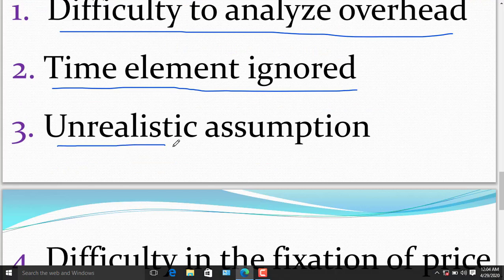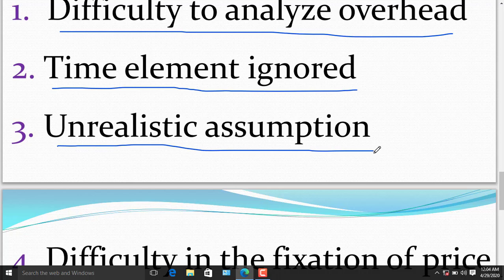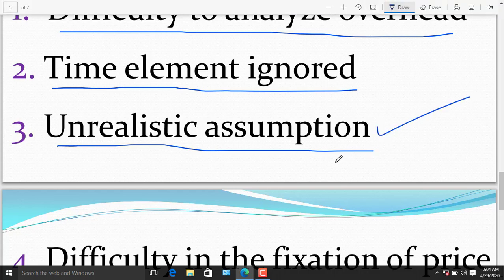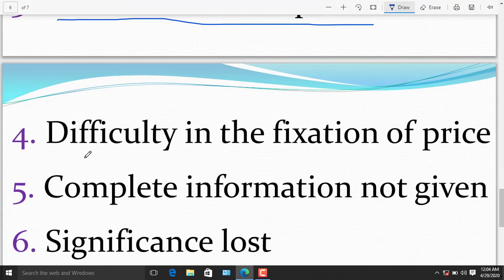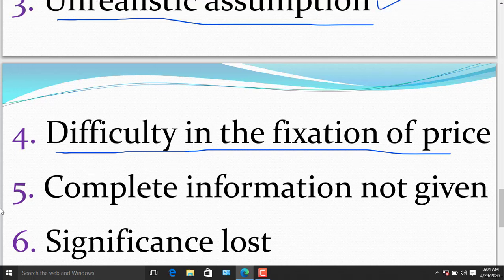Third limitation of marginal costing is unrealistic assumptions. Assumptions of sale price will remain the same at different levels of operations. In real life, they may change and give unrealistic results. Because assumptions always be assumptions, but reality is always reality. The fourth demerit of marginal costing is difficulty in the fixation of price. Under marginal costing, selling price is fixed on the basis of contribution. In case of cost plus contract, it is very difficult to fix price.